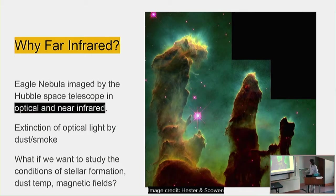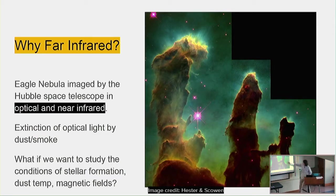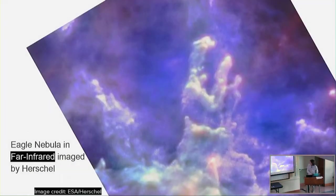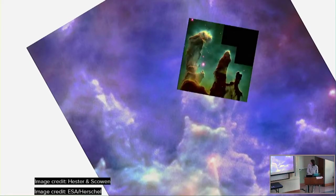This is a picture of the Eagle Nebula in optical, and you can see that a lot of the light is extincted by this gas or smoke. There are supposed to be stars forming in these regions, and if we want to actually study that, we want to be able to peer into the clouds. Here's that same region of the sky in far-infrared, imaged by Herschel.